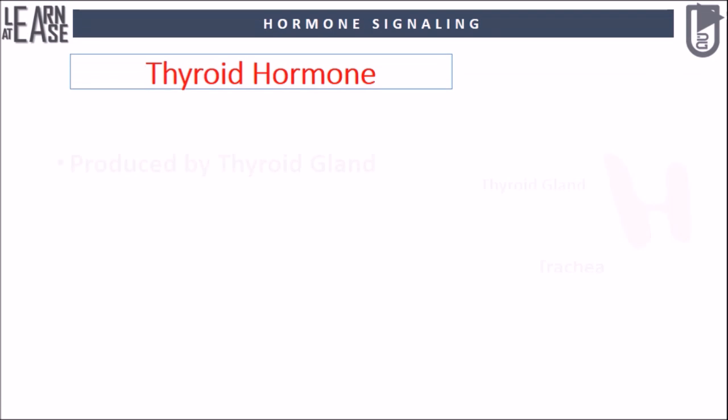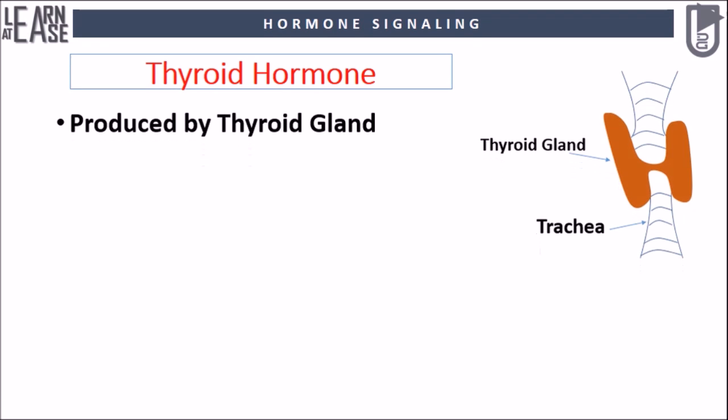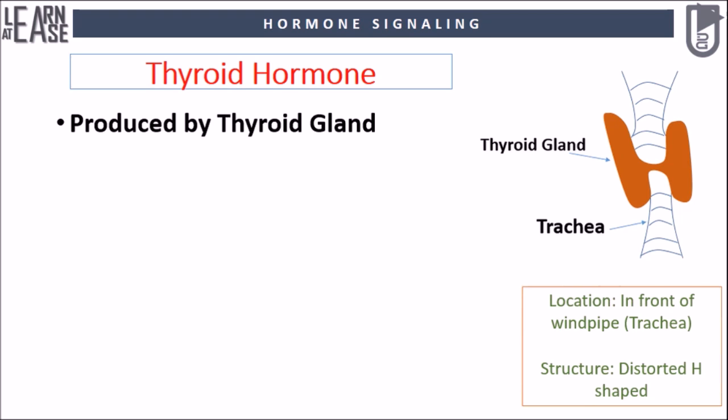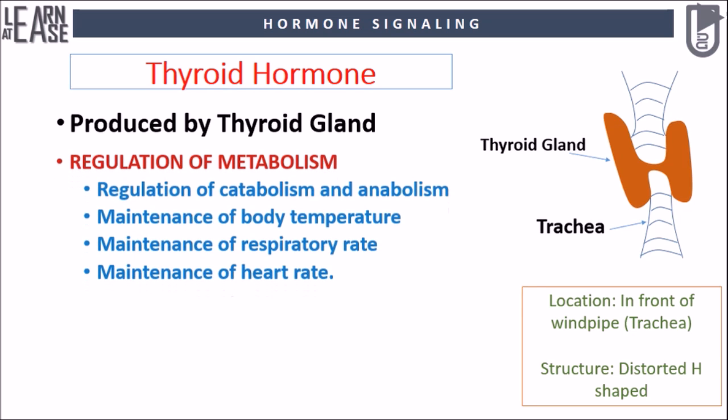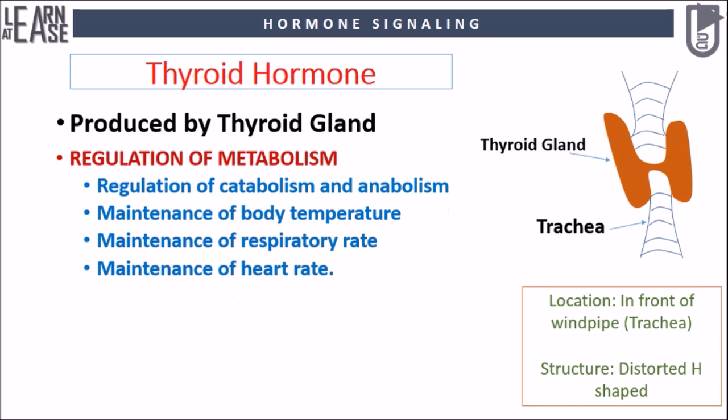Hormones are produced by thyroid glands which lies below your Adam's apple, along the front of the windpipe, and its structure can be described as a distorted letter H. Major functions of thyroid hormone include maintenance of overall metabolism, body temperature, respiratory rate, and heart rate.